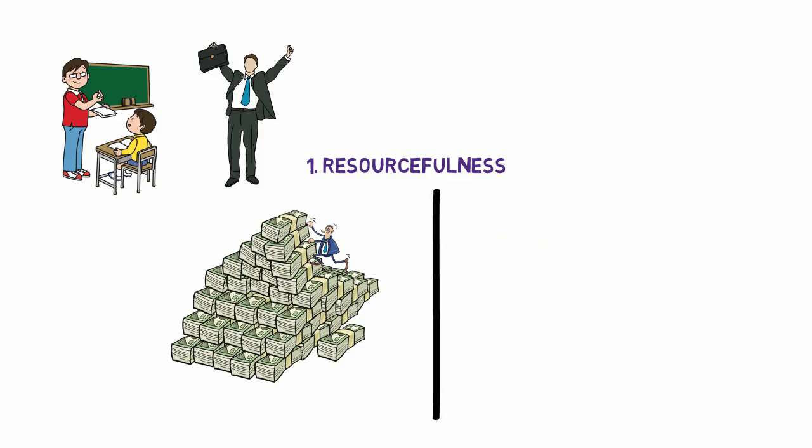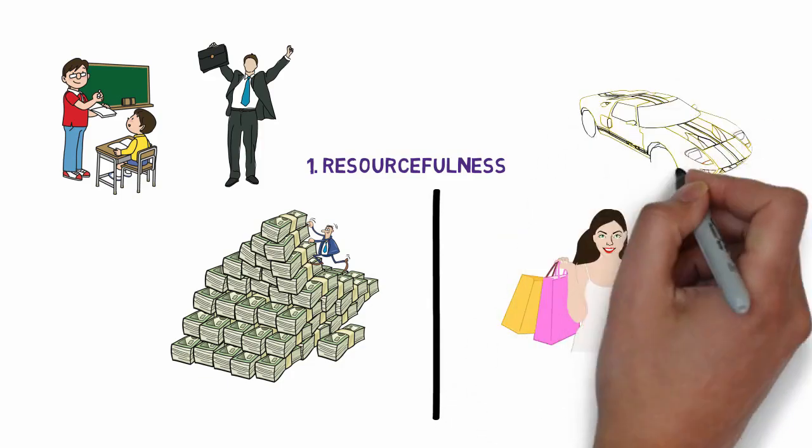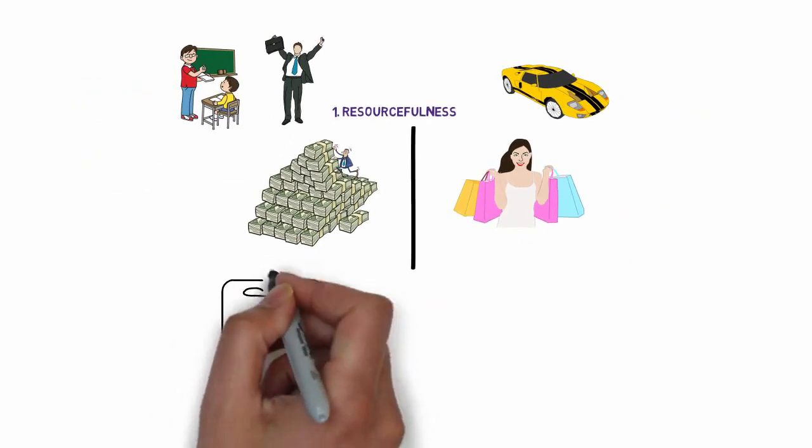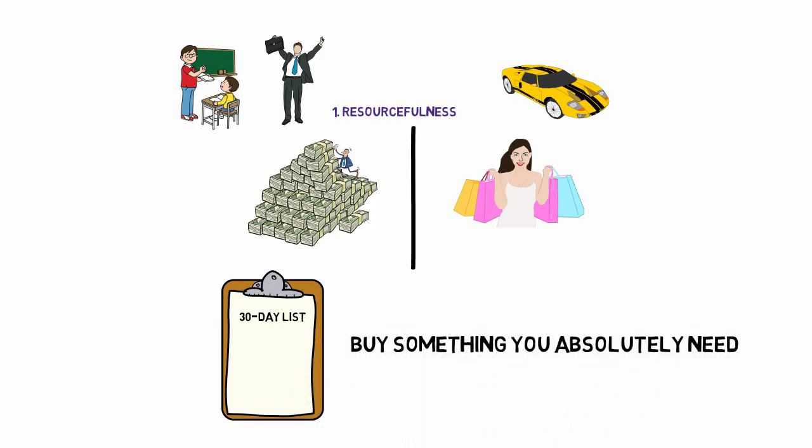A poor mindset immediately sees a surplus as an opportunity for consumption and inflates its lifestyle. Create a 30-day list. If you have to wait for your paycheck to buy something, it better be something you absolutely need. Think about where you can accelerate things and build your personal advantage.